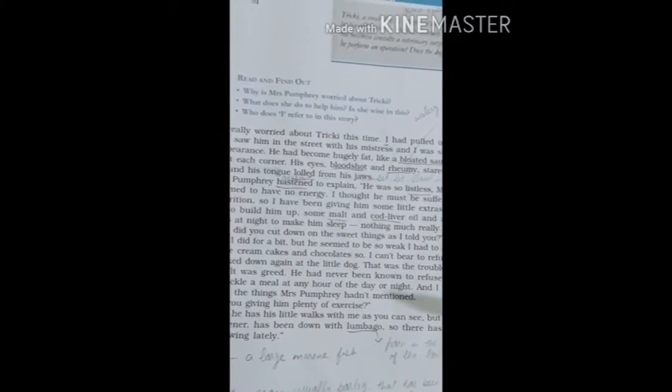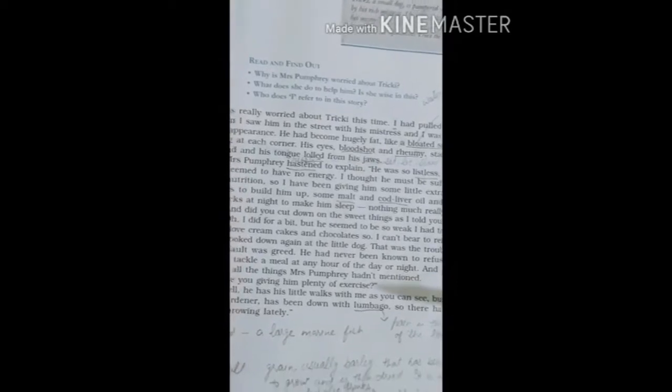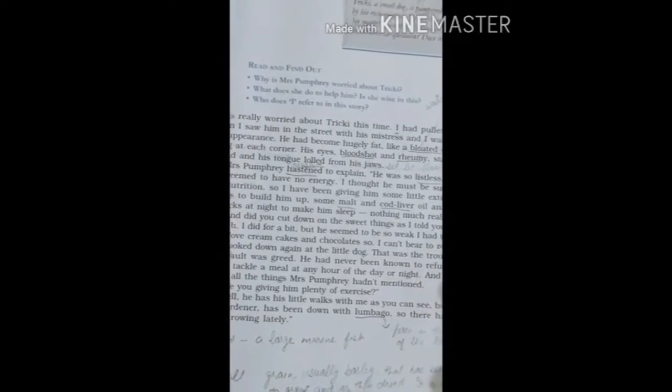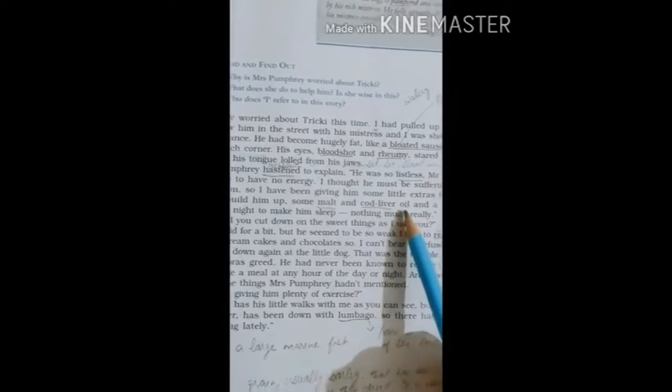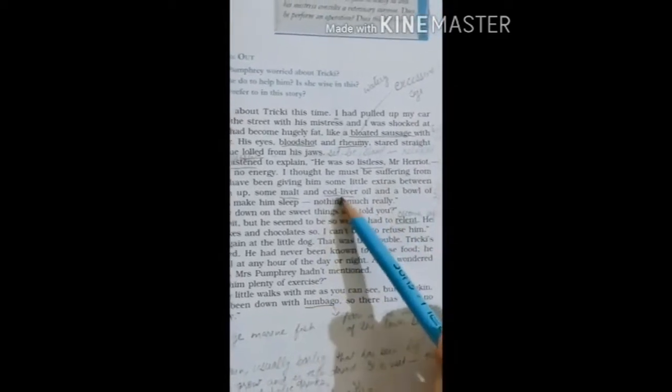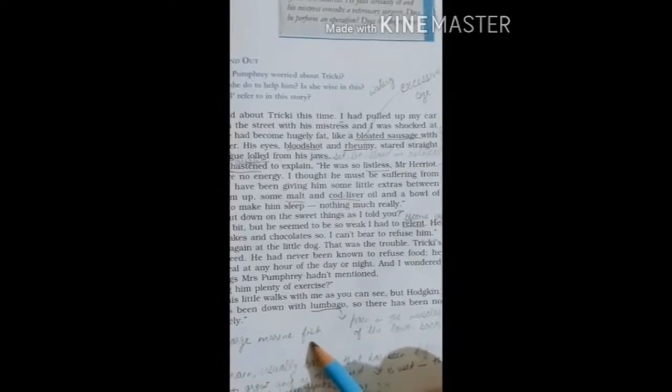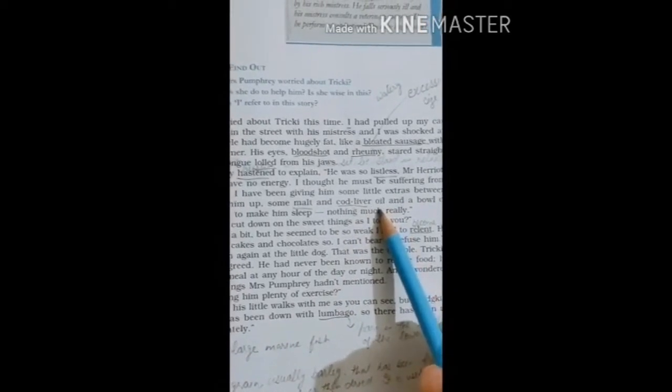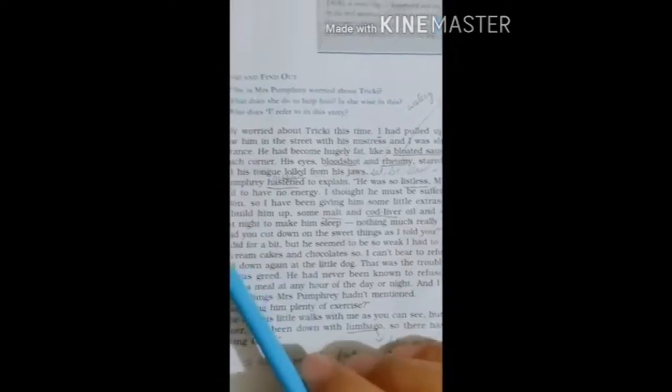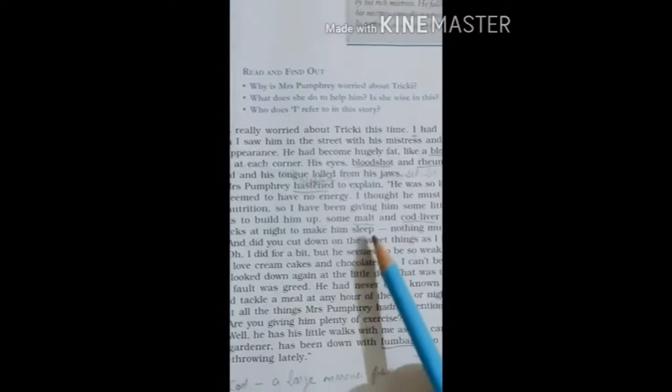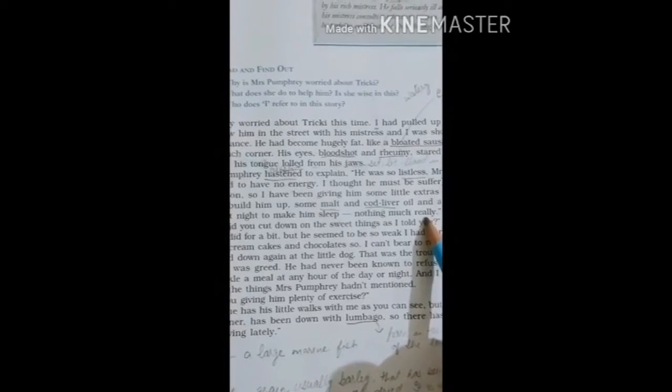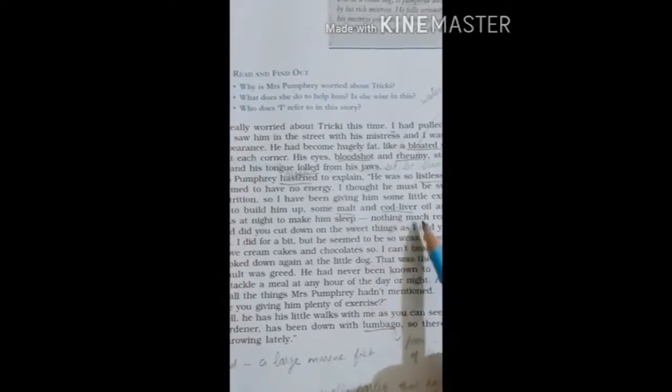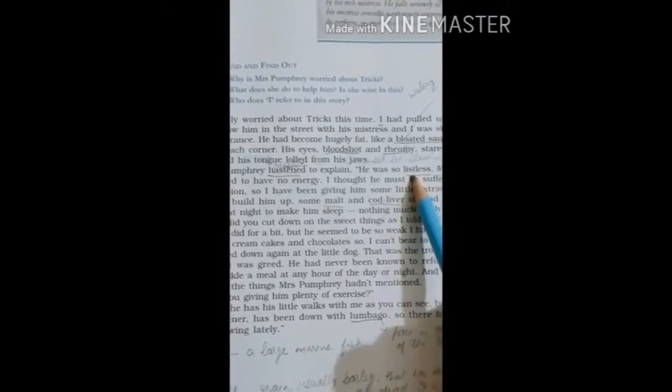Some malt - malt is a kind of grain, usually barley, that has been left in water to grow and is then dried. It is specially used in the making of alcoholic drinks - and cod liver oil. Cod is a large marine fish. And a bowl of Horlicks at night to make him sleep. Nothing much really.